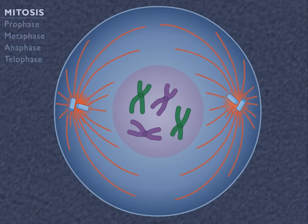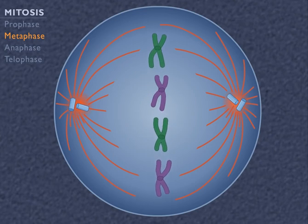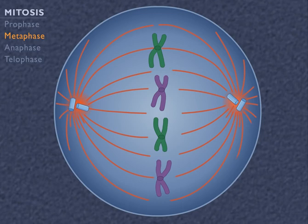During metaphase, the double-stranded chromosomes line up along the equator of the cell. The spindle is now fully formed and the microtubules attach to each sister chromatid.